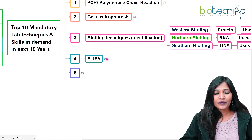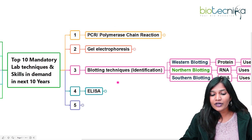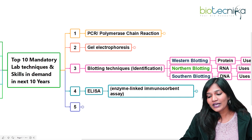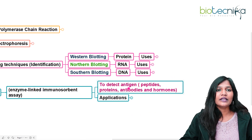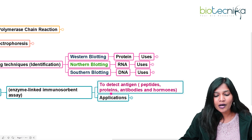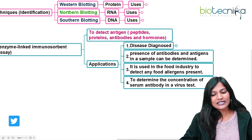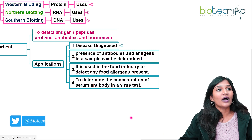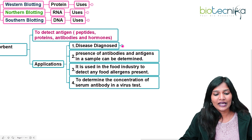The next important technique is ELISA — enzyme-linked immunosorbent assay. There are different types of ELISA, including sandwich ELISA. ELISA is specifically used to detect antigens, proteins, antibodies, and hormones. It is mainly used for disease diagnosis — for example, a preliminary ELISA test is used for HIV, followed by western blotting as a confirmatory test.